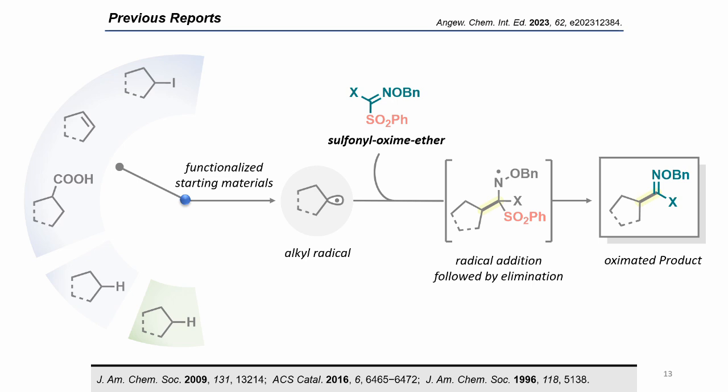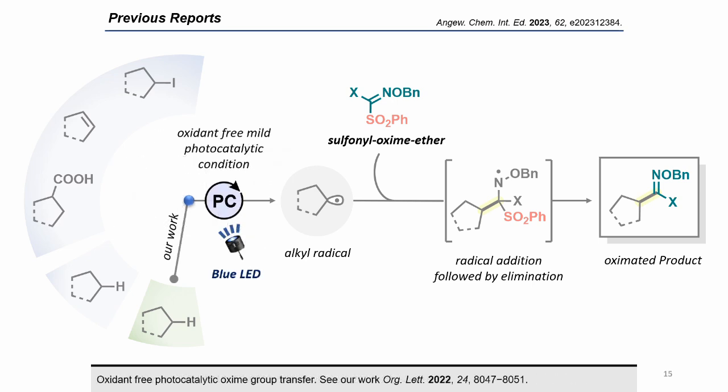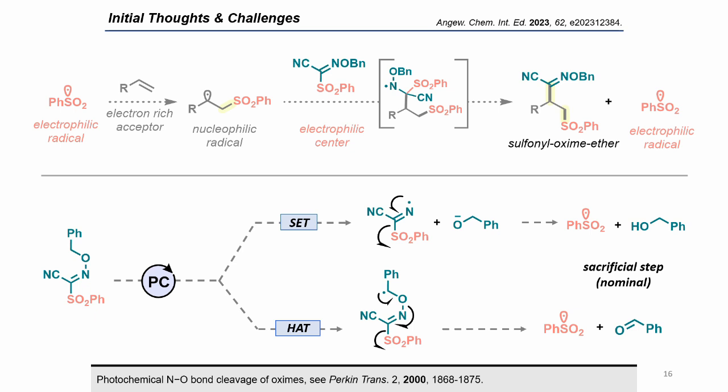There are several reports on oxime group incorporation using sulfonyl oxymethers; however, methods for generating carbon-centered radicals differ — either by using pre-functionalized substrates, stoichiometric HAT reagents, or mild photocatalytic conditions. A nucleophilic carbon-centered radical can attack the electrophilic sulfonyl oxymethar and deliver the oximated product by eliminating a stoichiometric amount of sulfonyl radical as chemical waste. If we replace the saturated substrate with an unsaturated alkene, the electrophilic sulfonyl radical might react with the alkene and generate an electrophilic carbon-centered radical, which can again attack the sulfonyl oxymethar, regenerating the sulfonyl radical via beta-fragmentation.